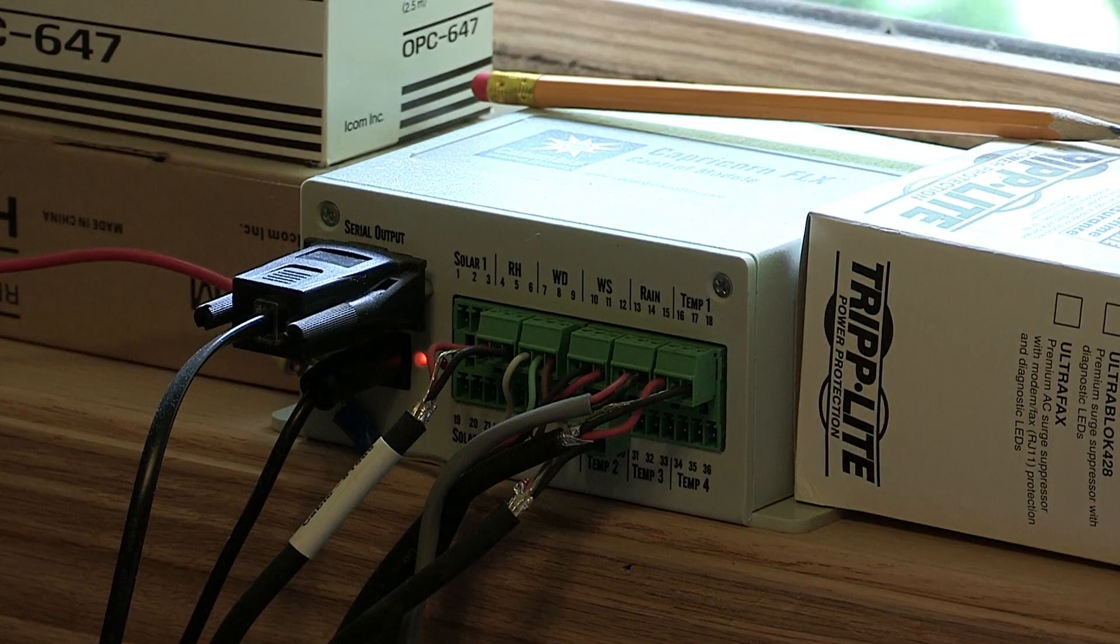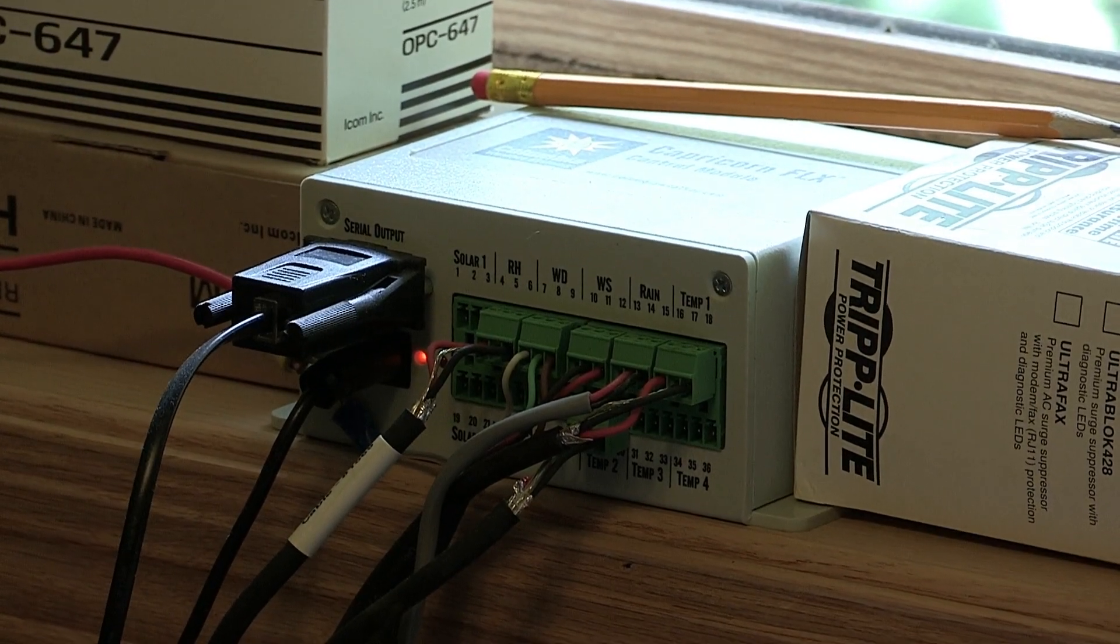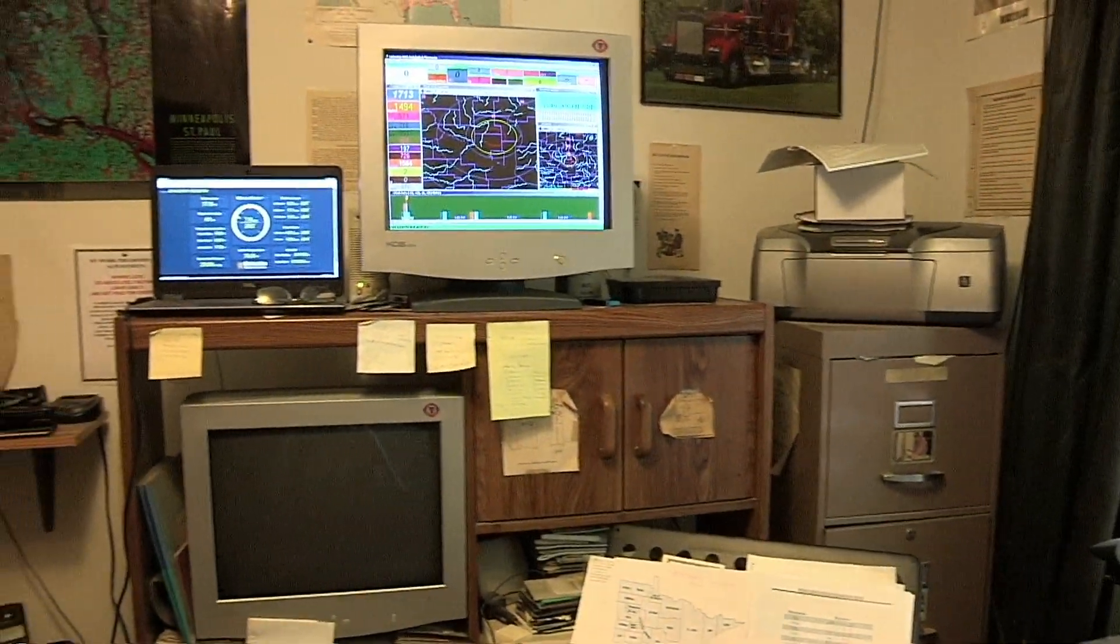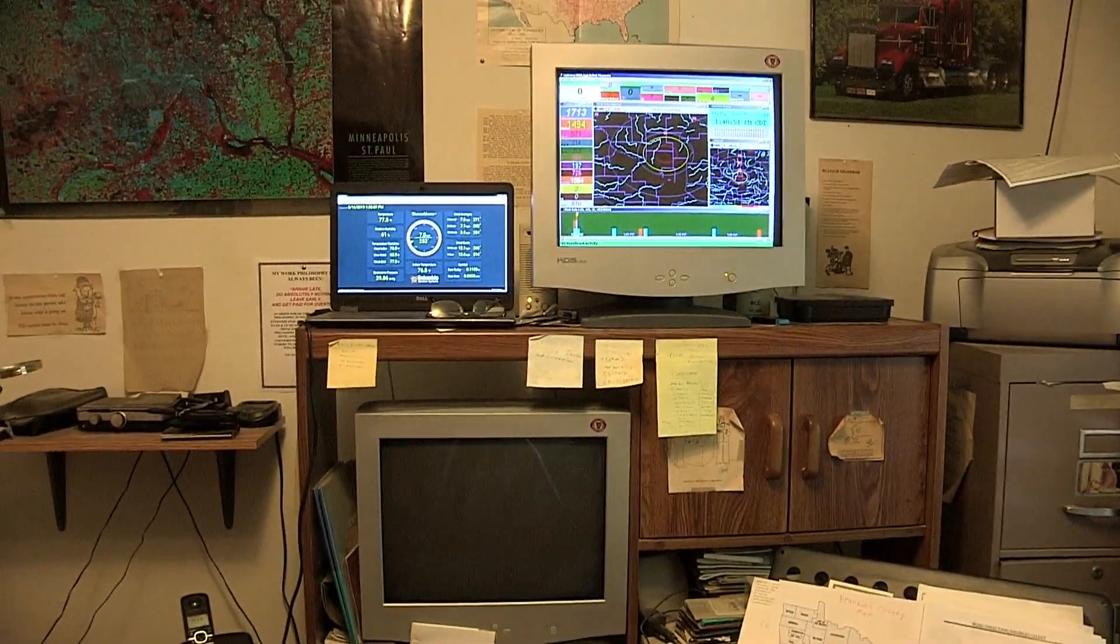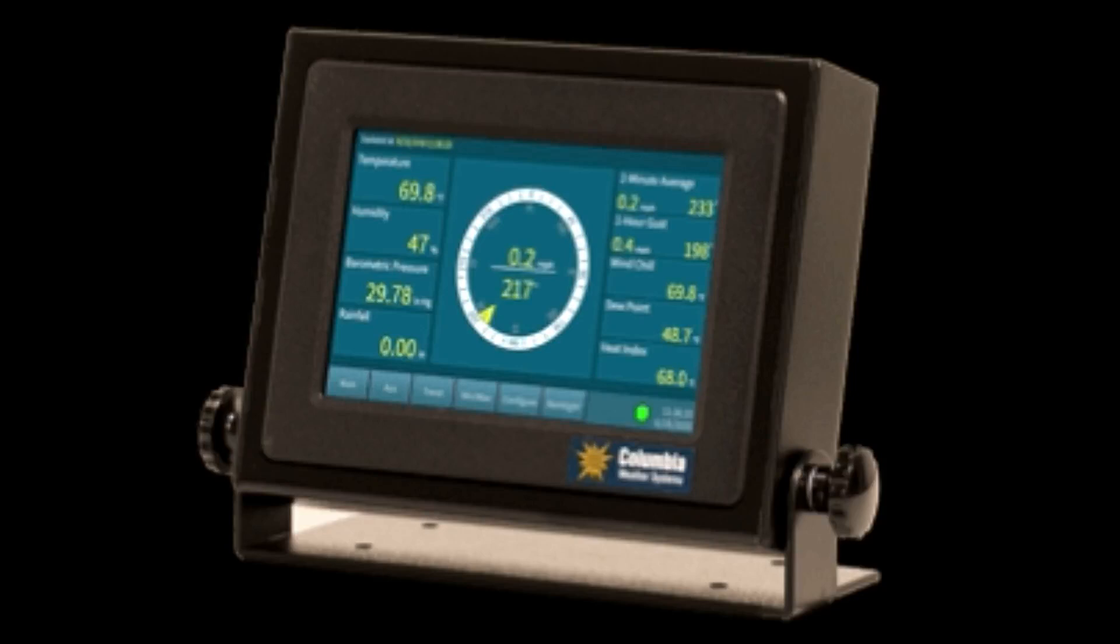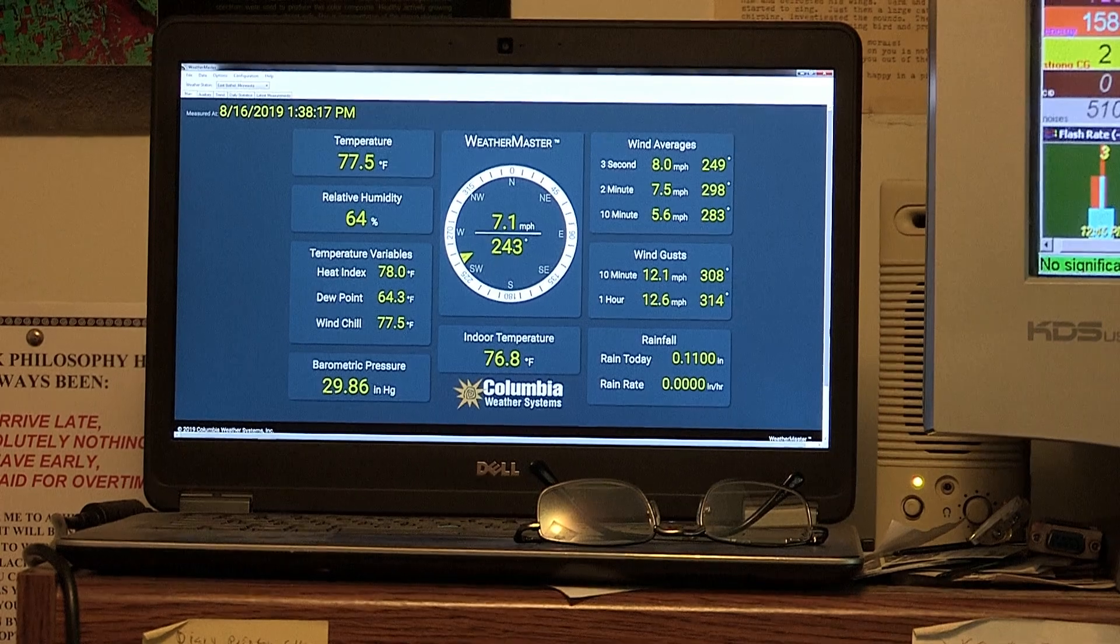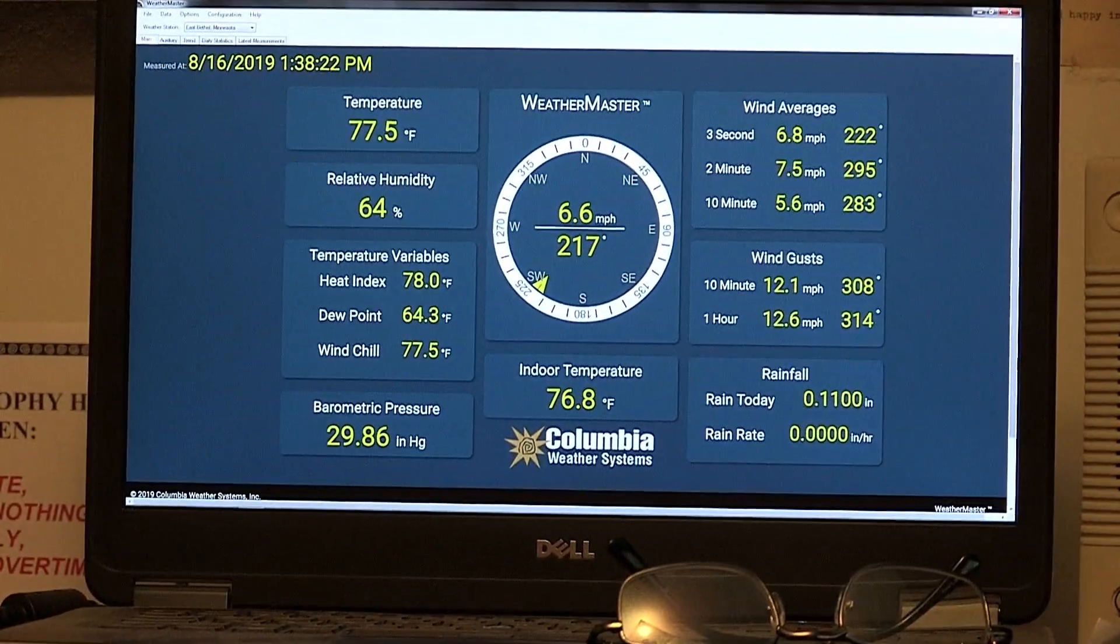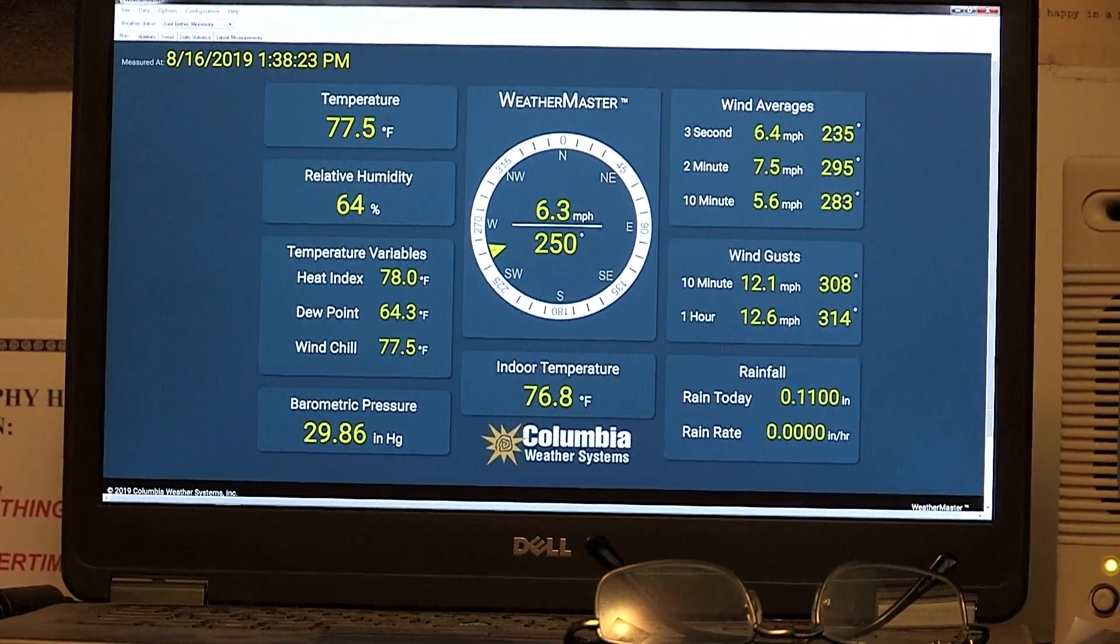Fortunately, you have options as to what you want to use to display. You can order it with this display console, which just displays the readings but doesn't save any information. Instead, I chose to use an old laptop to install the WeatherMaster software on.